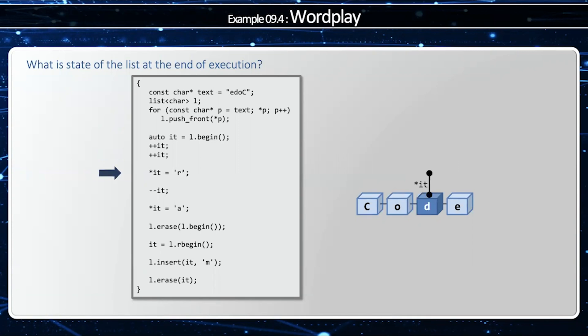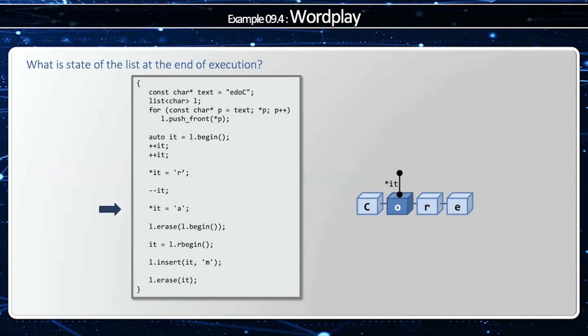I'm going to highlight the D to indicate that we have access to it. Using the dereference operator of the iterator, I'm going to change the value of D to R. I can change my iterator by moving back by one using the minus-minus operator, so now I'm referring to the O. And then I'm going to change the O to a lowercase A, using once again the dereference operator for the iterator.